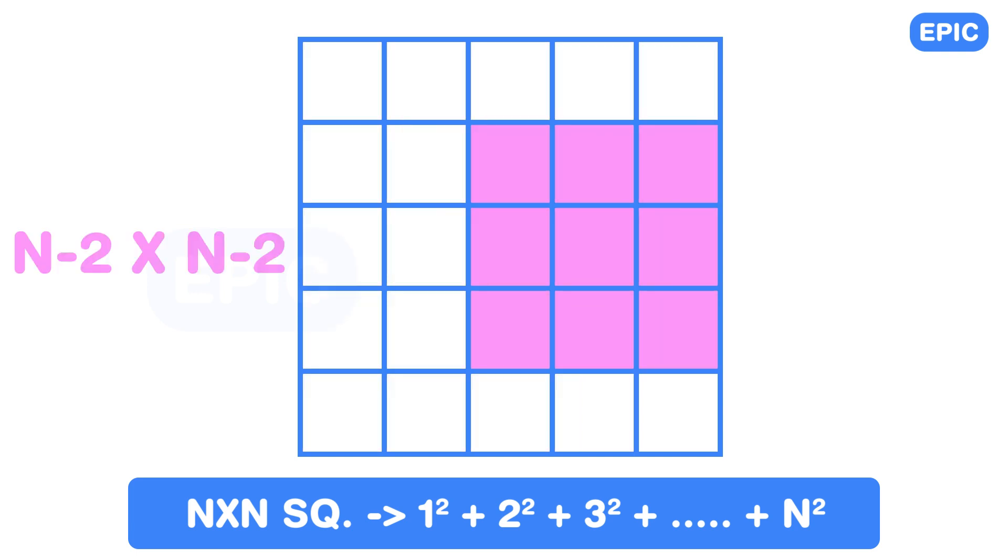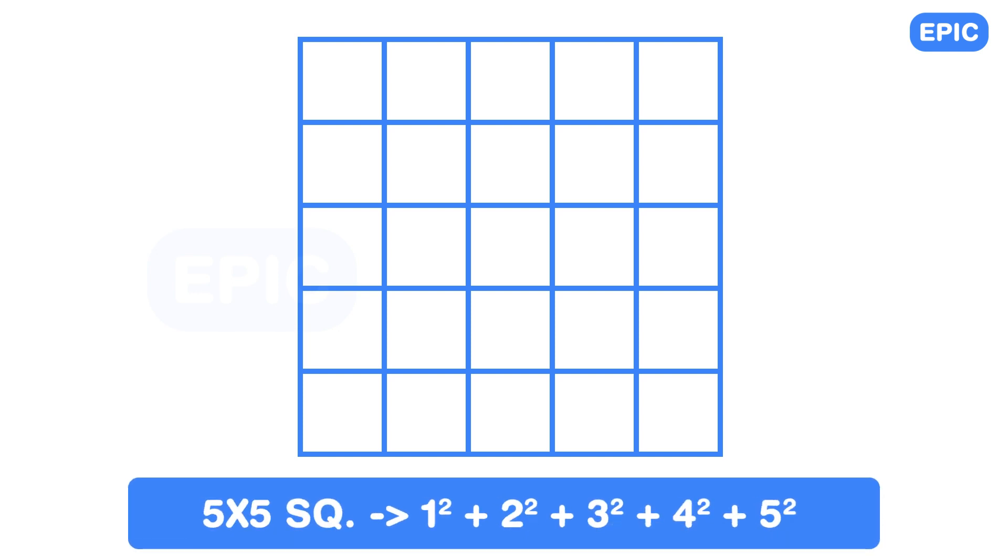It will have 3 squared, that is 9, N minus 2 x N minus 2 squares and so on. At the end of the series, we will have N squared 1 x 1 squares. So a 5 x 5 square will have 1 plus 4 plus 9 plus 16 plus 25 equals 55 squares.